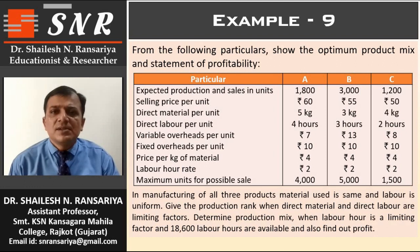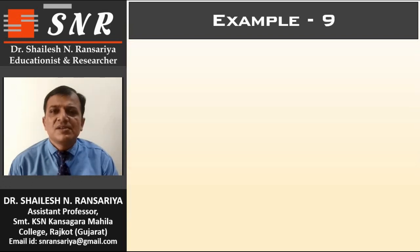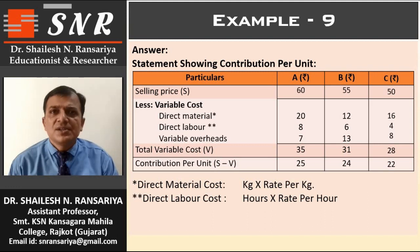In this example, two limiting factors are available — one is direct material and the other is direct labor. The important thing is that direct material is given in kg and direct labor is given in hours. So we have to calculate material cost by multiplying kg and rate per kg, and similarly for labor. Whenever it is an example of key factor, first we always have to calculate contribution per unit. So we prepare a statement showing contribution per unit, for products A, B, and C.